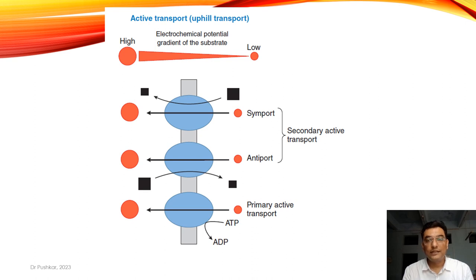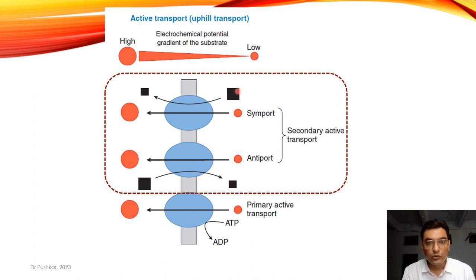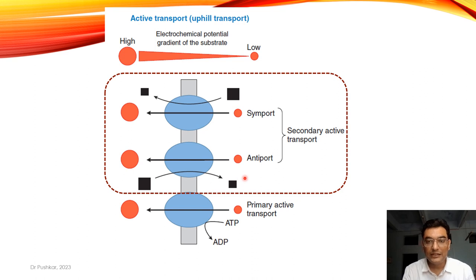Secondary active transport includes antiport and symport. Movement is from low to higher concentration using a carrier protein. The energy is derived from the movement of another substance (shown as black squares) moving from its higher to lower concentration — its energy is utilized by the primary drug moving uphill. If they move in the same direction it is symport; if in opposite directions it is antiport.